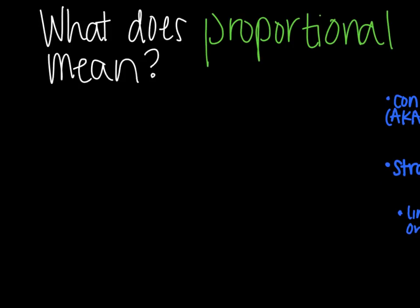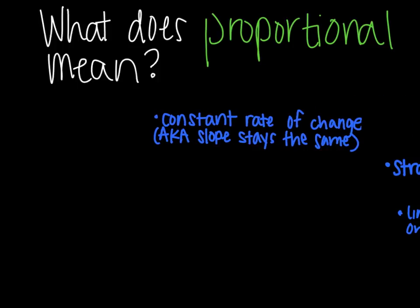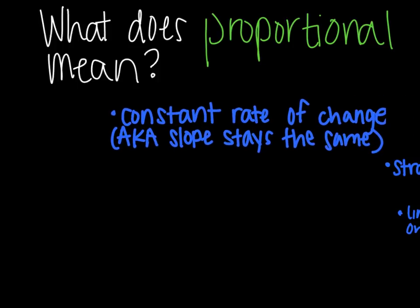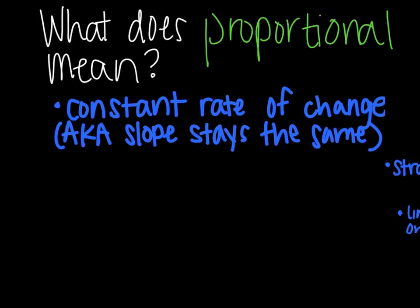Our first question is what does proportional mean? So vocabulary. In order for something to be proportional, it has to meet three requirements. The first one is that it has to have a constant rate of change. And you've learned that rate, another word for rate, is slope. So a constant rate of change, in other words, means you have to have the same slope throughout. It has to be consistent.